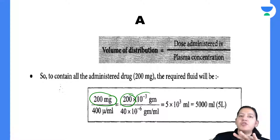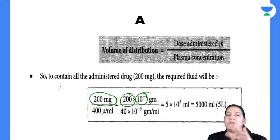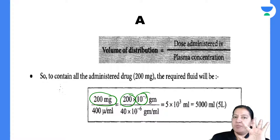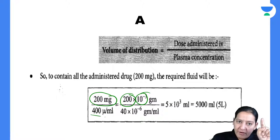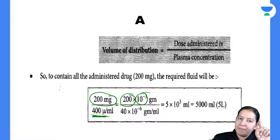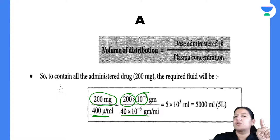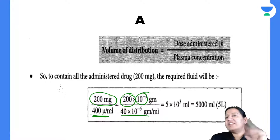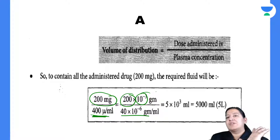Convert 200 mg to grams (milligram to gram), and convert 40 micrograms to grams (microgram to gram). All conversions should be in gram. You know unit conversion from physics. This is a numerical that came in NEET PG 3-4 years back.